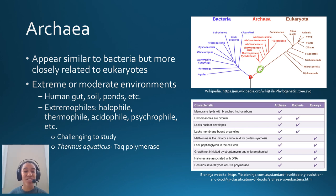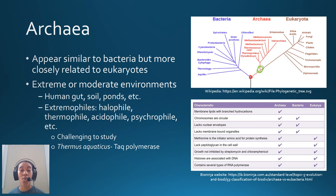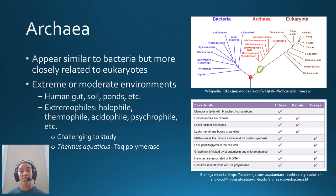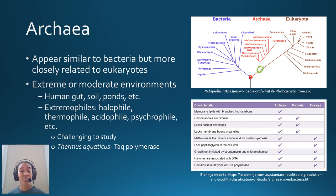We actually don't know very much about most extremophiles because we can't really study them in the lab, but we know they're there. One example that has been very important to science is Thermus aquaticus — we get an enzyme called Taq polymerase from this microorganism. Taq polymerase is used in PCR when looking at and amplifying genes. So even challenging-to-study extremophiles can have serious benefits.